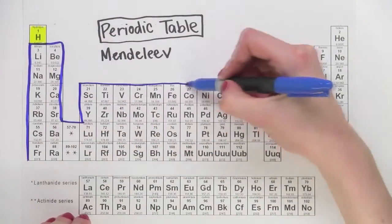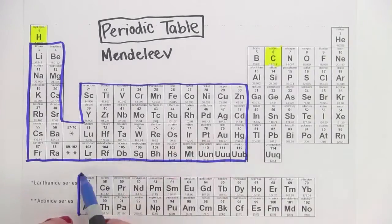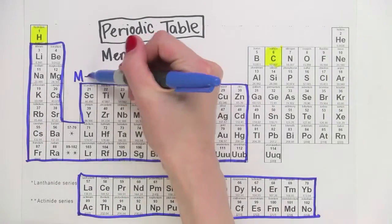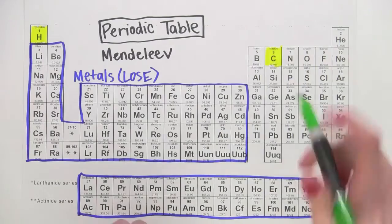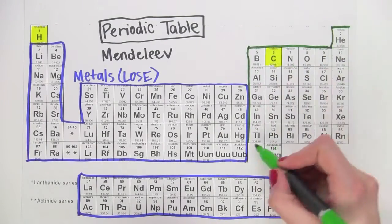Now on the left and middle of the table, we have the metals. To get to eight electrons in their outer shell, the metals lose electrons. And on the right side of the table, we have nonmetals.